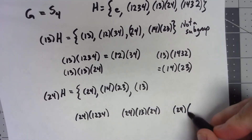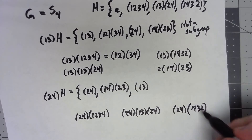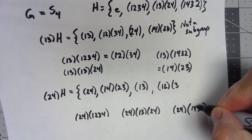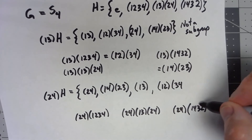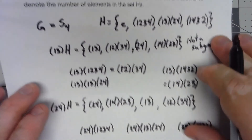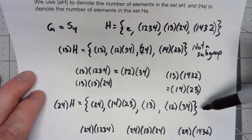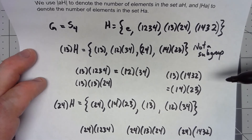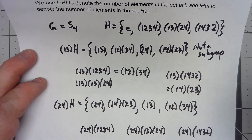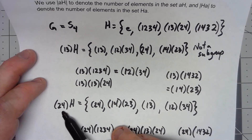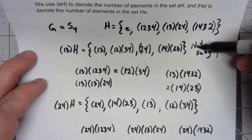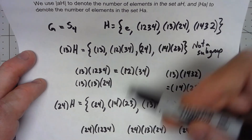Finally, (2 4) times (1 4 3 2): one goes to four goes to two; two goes to one; three goes to two goes to four; four goes to three. We now notice that the coset (2 4)H is the same thing as (1 3)H — the order in which the elements appeared was different but we got the exact same elements. The reason that happened is because (2 4) was already in this coset — any time you take an element that's in a coset and create the coset of that element, it gives you the same coset.